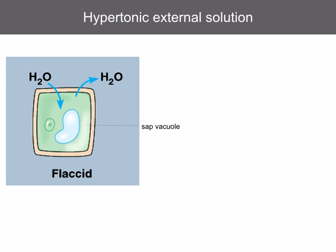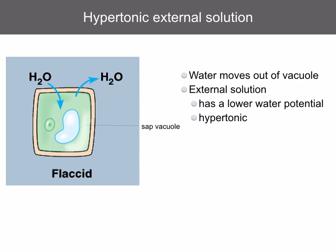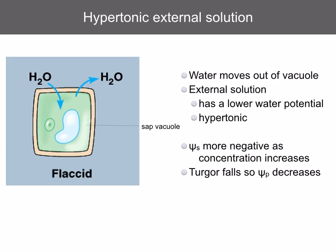In a hypertonic solution, water moves out of the cell and out of the vacuole by osmosis, as the external solution has a lower water potential. As water leaves, the solution inside becomes more concentrated, so the solute potential becomes more negative. Turgor falls, so the pressure potential decreases until it equals zero. At this point, we say the cell is flaccid, and plasmolysis is about to begin.